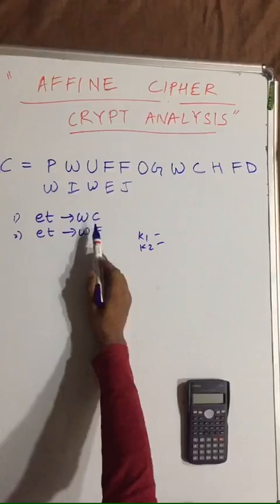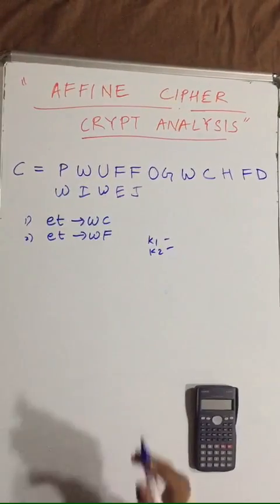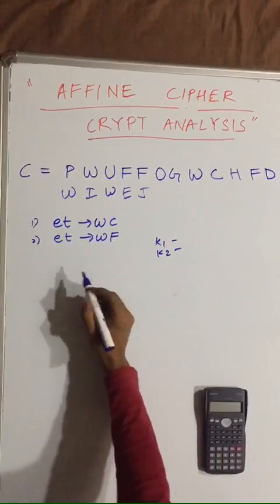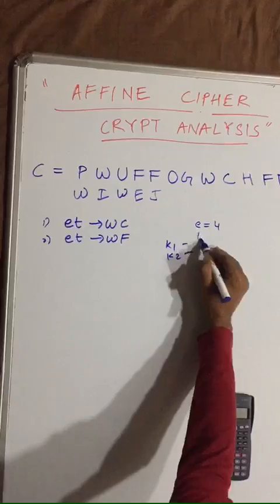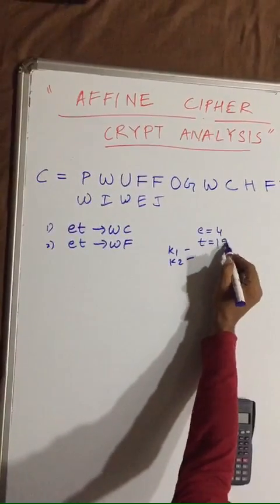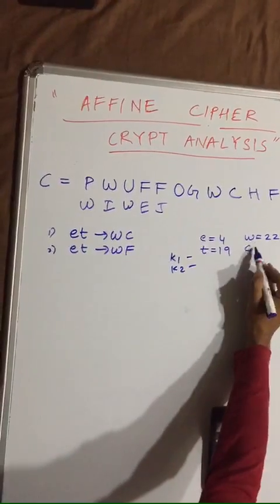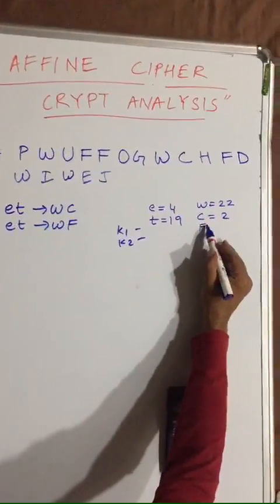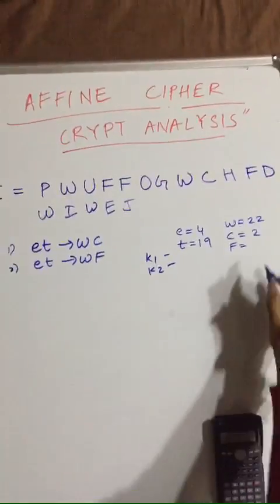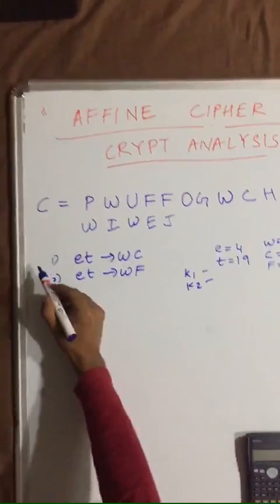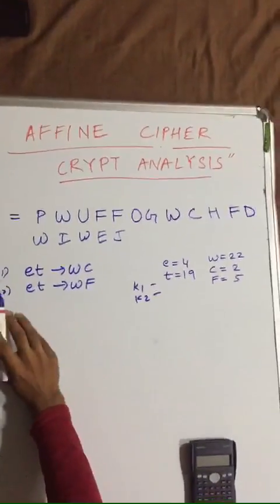We will get the values from these two pairs. We have to find the corresponding numeric values: the value of 'e' is 4, 't' is 19, 'w' is 22, 'c' is 2, and 'f' is 5.